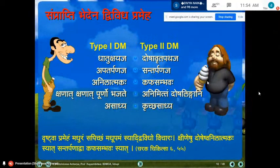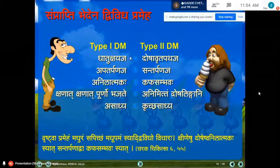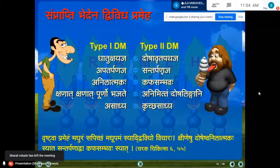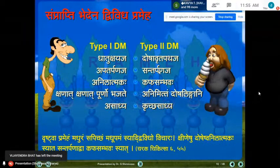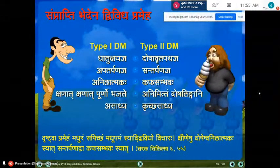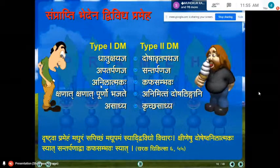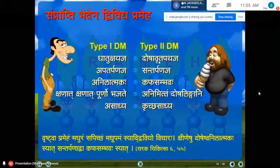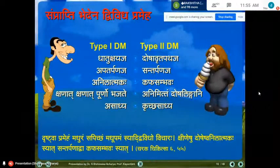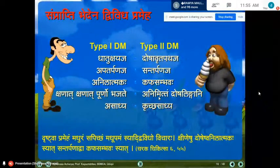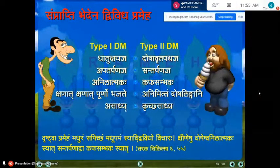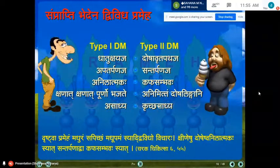Dhatukshaya and dosha avrtta pathaja are two more varieties. Dhatukshaya is caused by apatarpana, which causes dhatukshaya and then prameha. Dosha avrtta pathaja is caused by santarpana. Dhatukshaya leads to vitiation of vata dosha; therefore predominance of vata is characteristic of the dhatukshaya variety. For kapha sandhava — kapha features are predominant in avrtta pathaja prameha. As far as progression, dhatukshaya variety is slowly progressive; avrtta pathaja can manifest clinically in a shorter duration. Dhatukshaya variety is asadhyaya, while dosha avrtta pathaja has comparatively better prognosis.